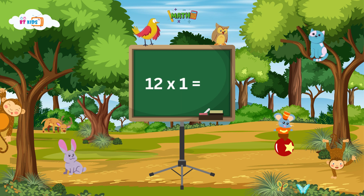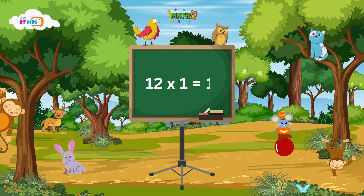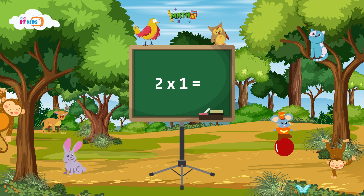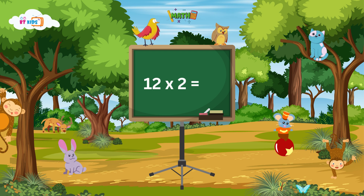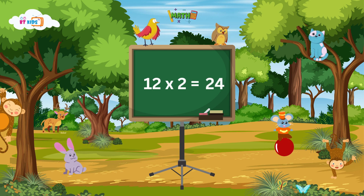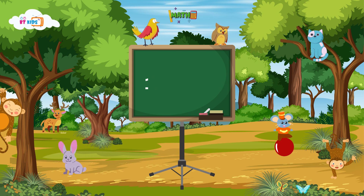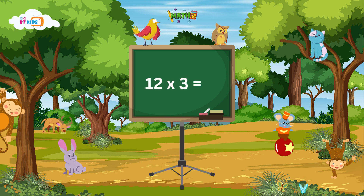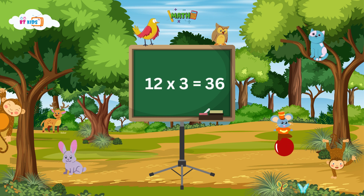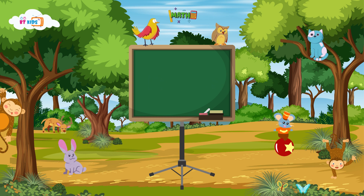12 ones are 12. 12 twos are 24. 12 threes are 36.